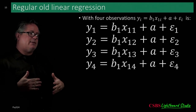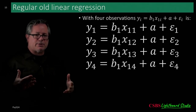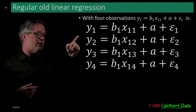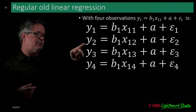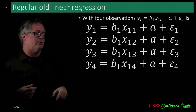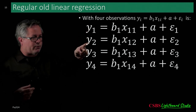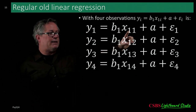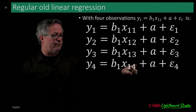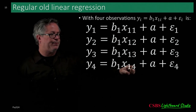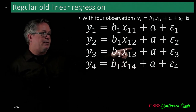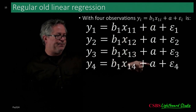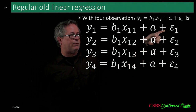Let's apply this to a very simple example. We have four people with outcome scores Y1 through Y4, and a predictor score X1 for each person. There's one intercept for everybody, and each person has their own error term representing how far their score is from the predicted value.